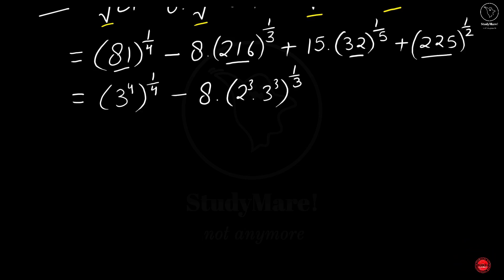Next, we have plus 15, 32. So the factors of 32: we have 2 16's are 32, 2 8's are 16, 2 4's are 8 and 2 2's are 4. So we have 1 2 3 4 5, 2 to the power 5 which can be written over here. That is 2 to the power 5 to the power 1 by 5 plus.